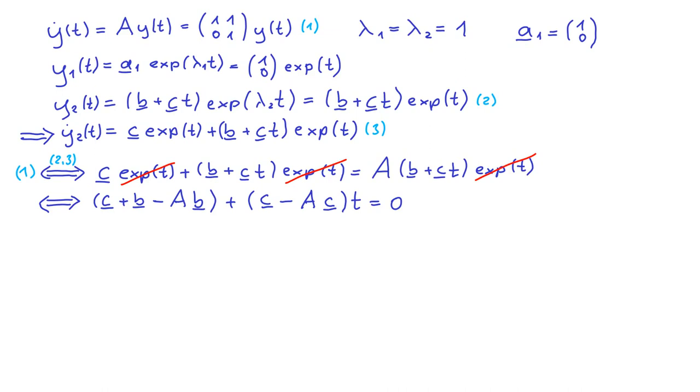Since this equation has to be true for any t, we see that each of these expressions has to be 0 individually. Now the second expression is simply our eigenvalue equation, because it is equivalent to A times c equals 1 times c. And we know that 1,0 is a solution to that.